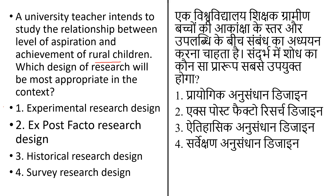The experimental research design establishes a causal relationship between two or more variables, with other variables except the independent variable held constant. The exposed factor research design is where the researcher attempts to trace the effect that has already occurred to its probable cause, and the researcher has no direct control over the independent variable because it occurred prior to producing its effect.